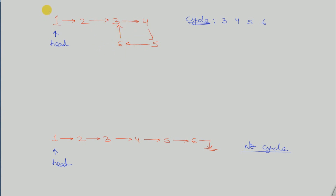In order to find a cycle I will take two pointers: a slow pointer SPTR and a fast pointer FPTR. The slow pointer will move by one step and the fast pointer will move by two steps simultaneously, until they both become equal or the fast pointer hits null — meaning the list ends. Either of the two happens, then we will stop.